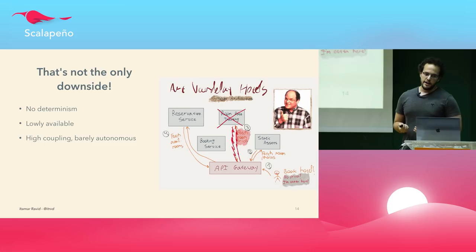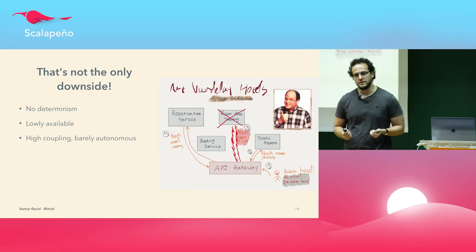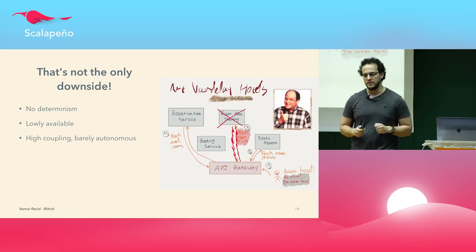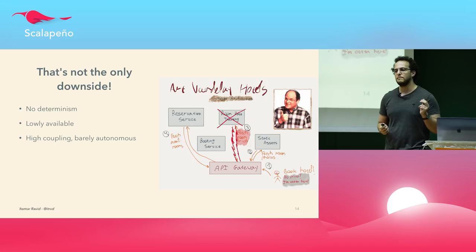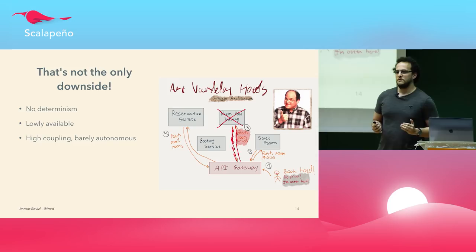We're piling up the entire system into a single transaction — all services involved — which does not make a highly available system. We're multiplying the probability of a defect in each service. This is the exact opposite of why we'd like to do microservices. This is not decoupled in any way — it's highly coupled and barely autonomous. This is not a distributed microservices architecture; this is a distributed monolith.